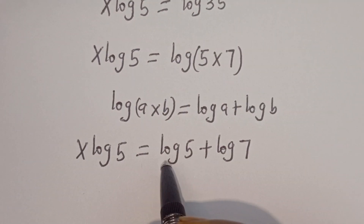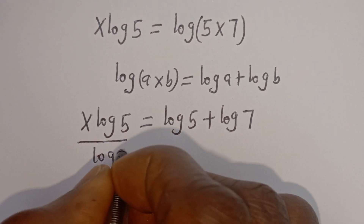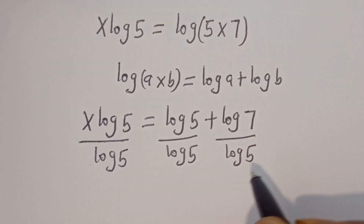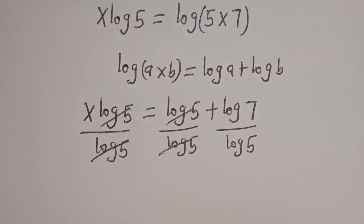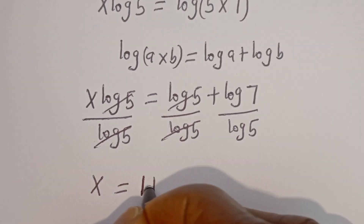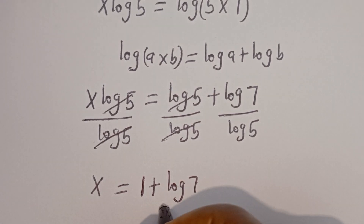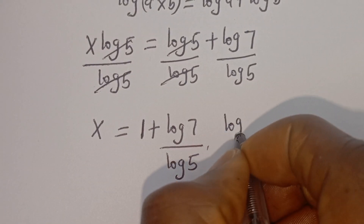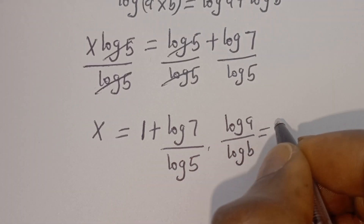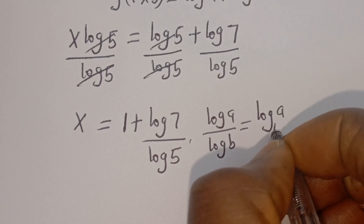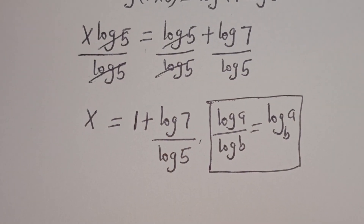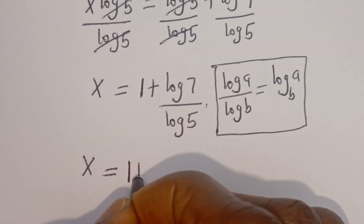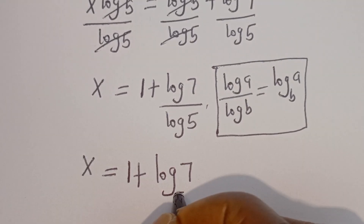Let's divide both sides by log 5. This will cancel this, and this will cancel this. X is equal to log 5 divided by log 5, plus log 7 divided by log 5. Then if you have log A divided by log B, this can be written as log A base B. Therefore, our final answer can be written as X is equal to 1 plus log 7 base 5.